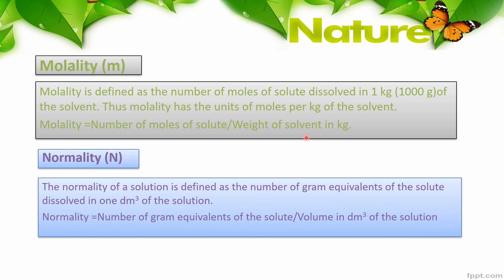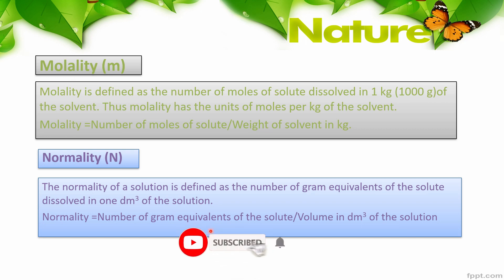Then we have normality. The normality of a solution is defined as the number of gram equivalents of the solute dissolved in one dm³ of the solution. The term normality is most commonly used for acids and bases. Normality equals the number of gram equivalents of solute divided by the volume in dm³ of the solution.